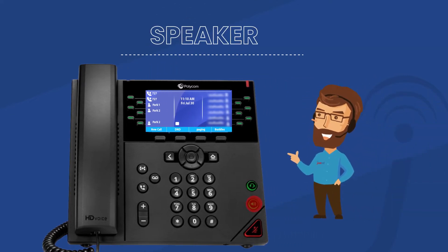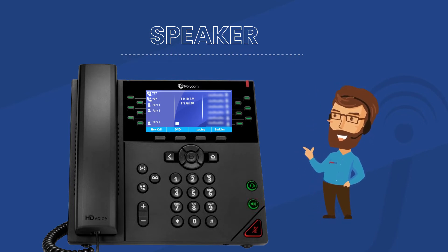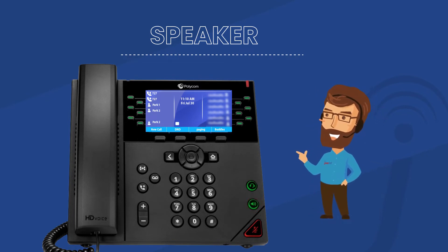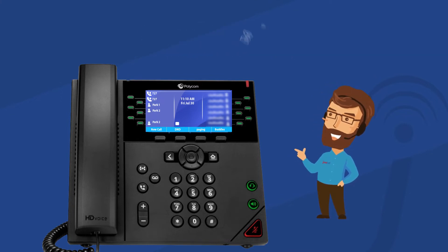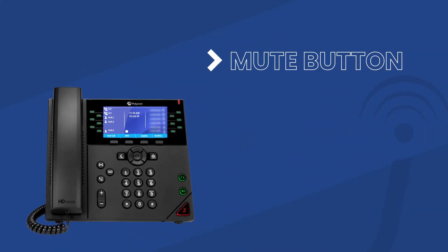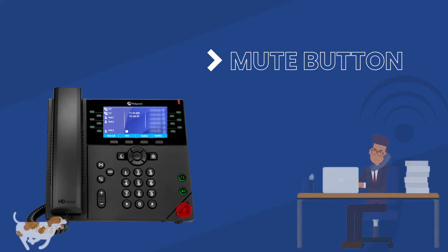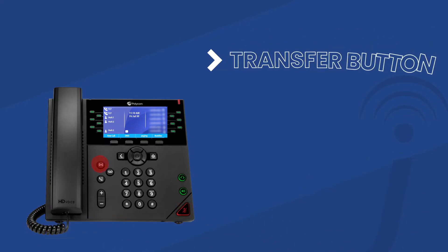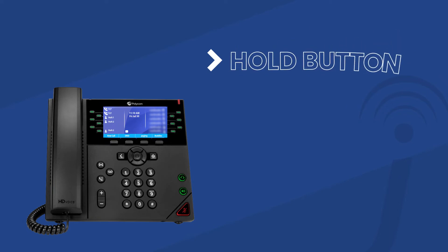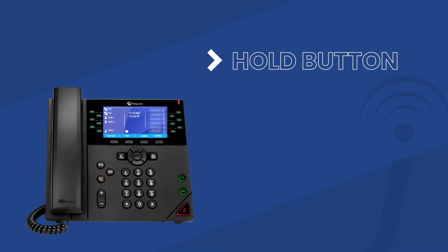Can't pick up the headset right away, or have other people in the room who need to hear what's going on? Press the speaker button for everyone's listening pleasure. The mute button is the button you press when you're on a call and don't want everyone to know you're not listening while you converse with your co-worker. The transfer button is the button you press when you want to perform one of the four call transfers — we'll get to those soon. The hold button is an easy and convenient way to put calls on hold without using the soft key that appears on screen.